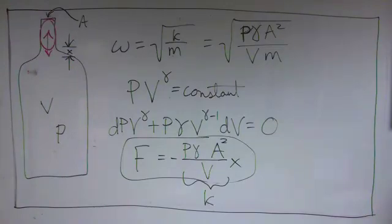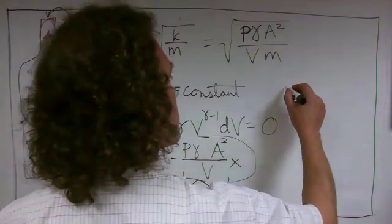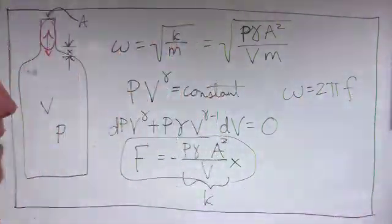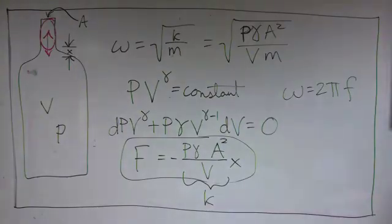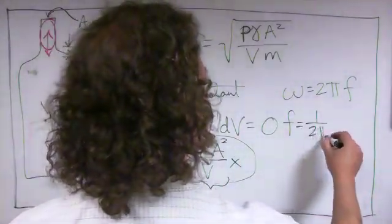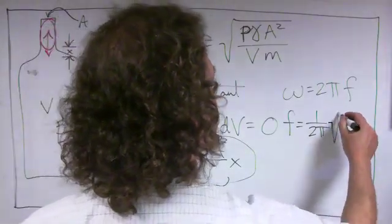We're going to test that against the frequency of sound that's actually produced. The frequency we're measuring is the cyclic frequency, which is related to the angular frequency through f = ω/2π. Here's the frequency that we're going to be testing.